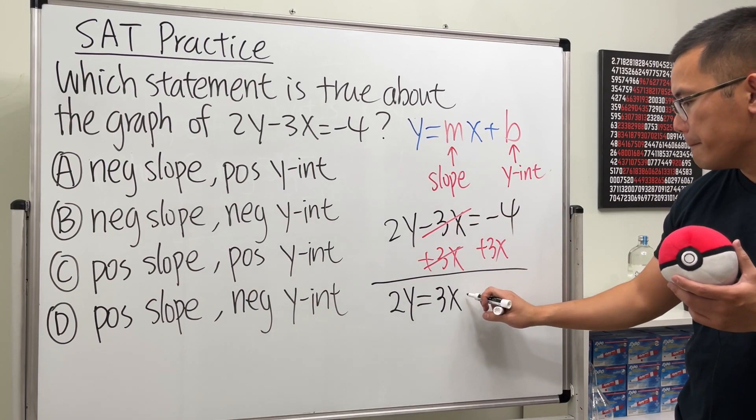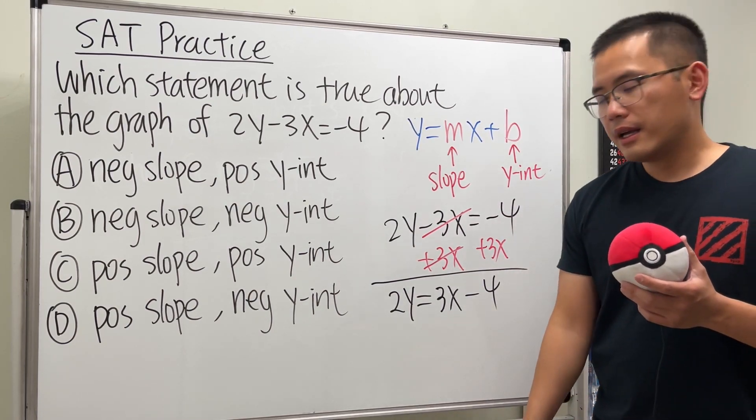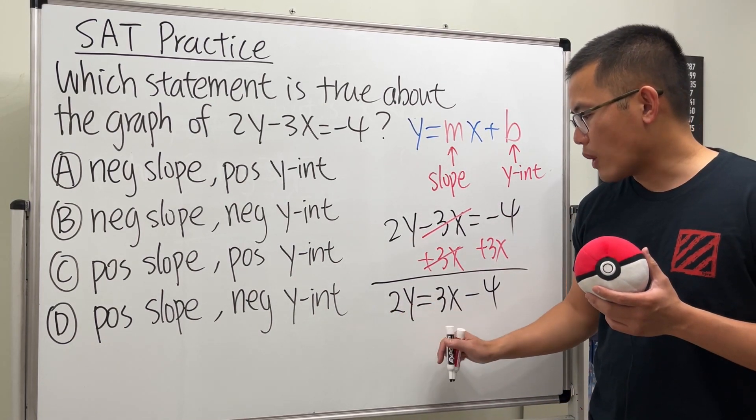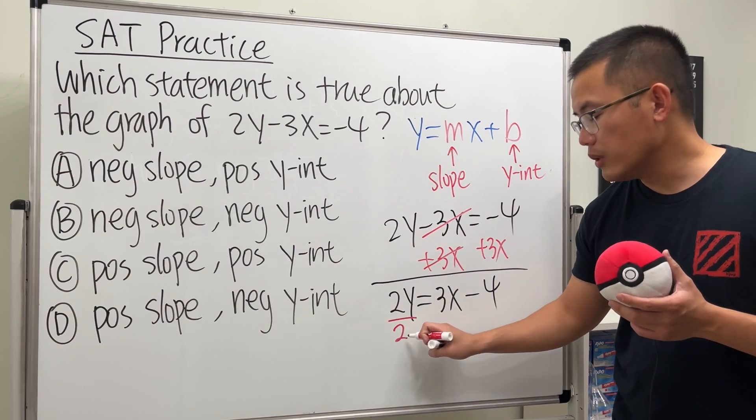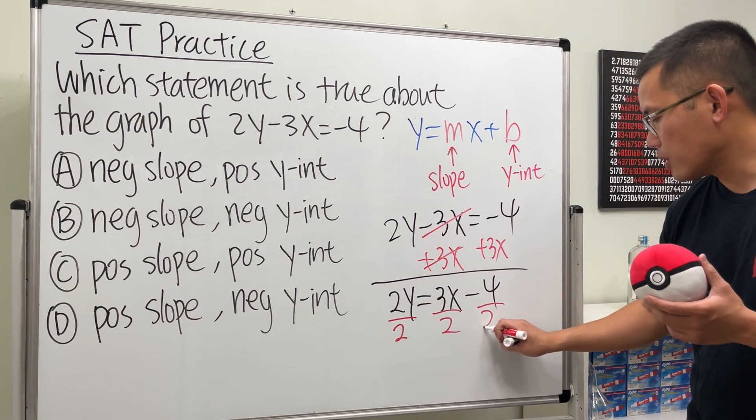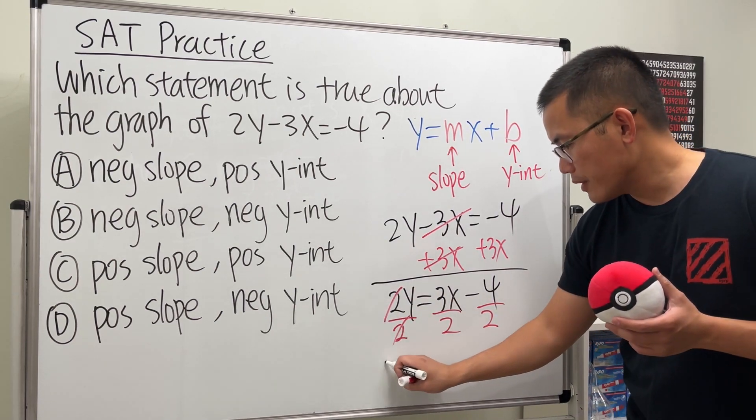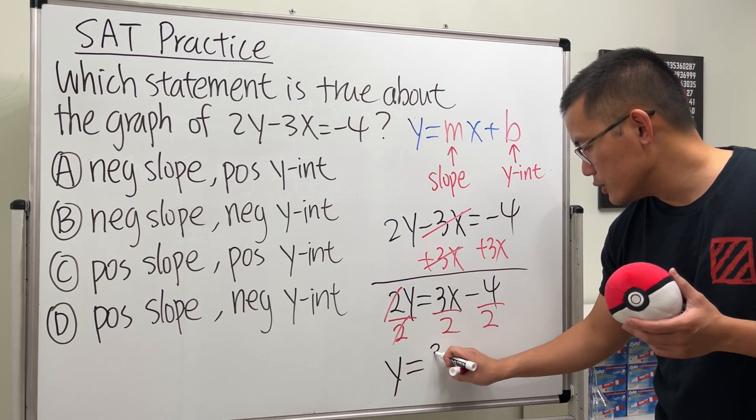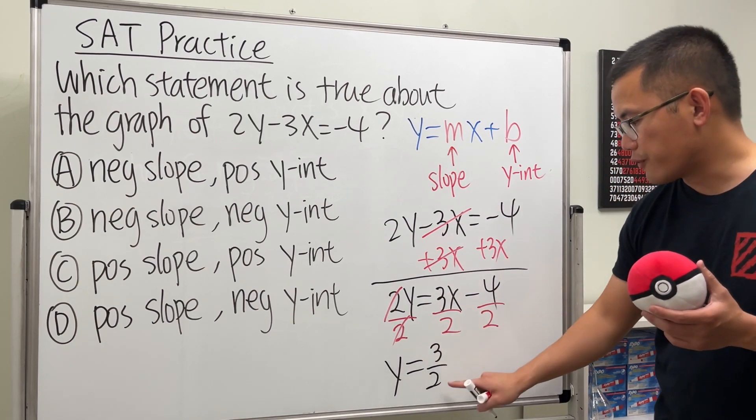And then minus 4. One more step: this is 2 times y, so we'll have to divide by 2. In fact, we'll have to divide everything by 2. That will cancel. y = 3/2x, and then negative 4 divided by 2 is negative 2.